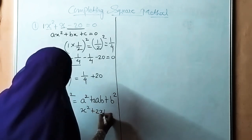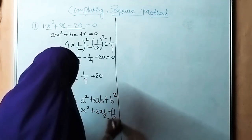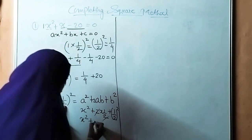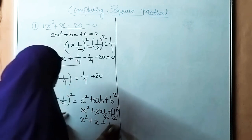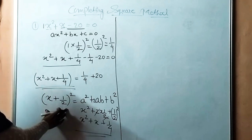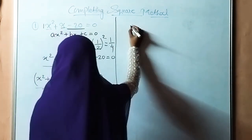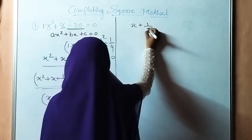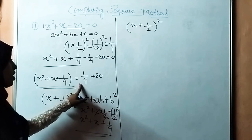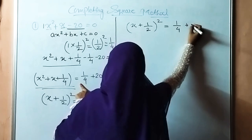So x plus 1/2 bracket square, when expanded, gives x square plus 2 times x times 1/2 plus 1/4, which is exactly x square plus x plus 1/4. So the first three terms simplify to x plus 1/2 bracket square, and the remaining terms are minus 1/4 minus 20.